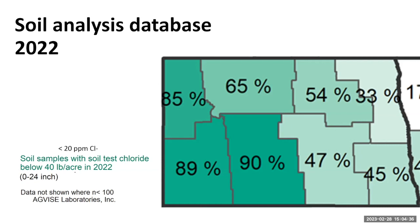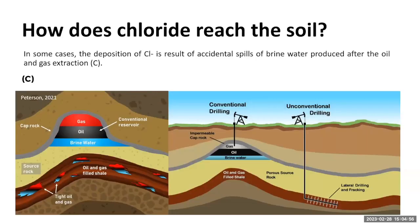This is something common in the east part of the state, where we can see, thanks to AgBiz data, that we have enough chloride. But chloride is a little lower in the west part of the state. This is very interesting because in the west part, what we have is oil and gas extraction, and this is one of the ways that we can move chloride from the groundwater to the surface.